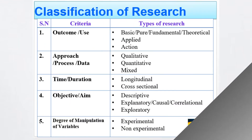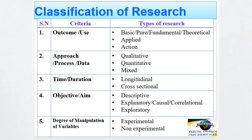Let us see the basic classifications of research using the common criteria. The first criterion used to classify research is the purpose, outcome, or use of the research. As per the purpose or outcome, research can be classified into basic, pure, fundamental, theoretical, applied, and action research. Applied and fundamental research can be categorized under the criteria of outcome, use, or purpose.